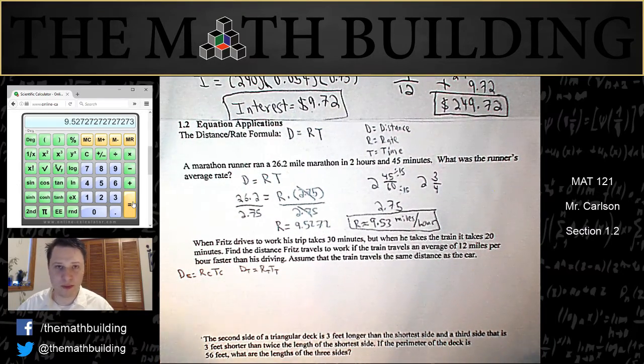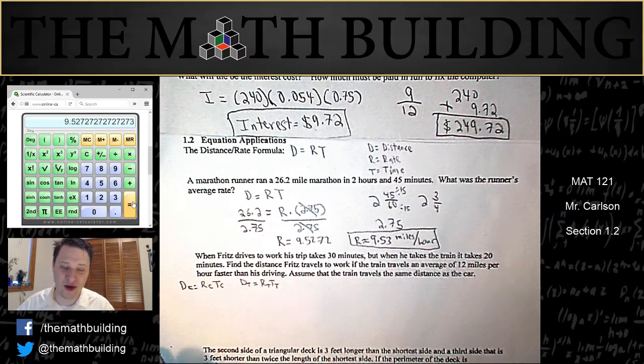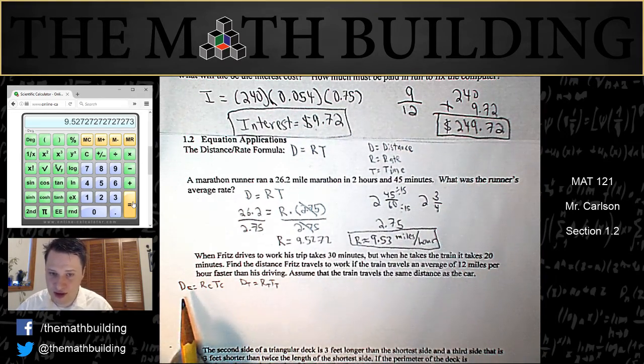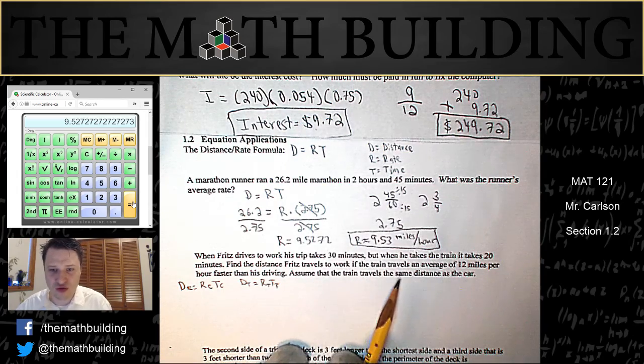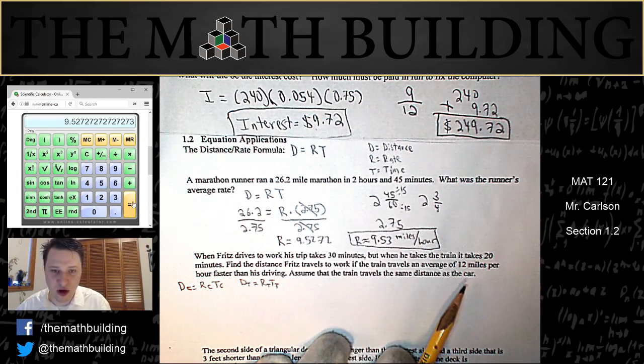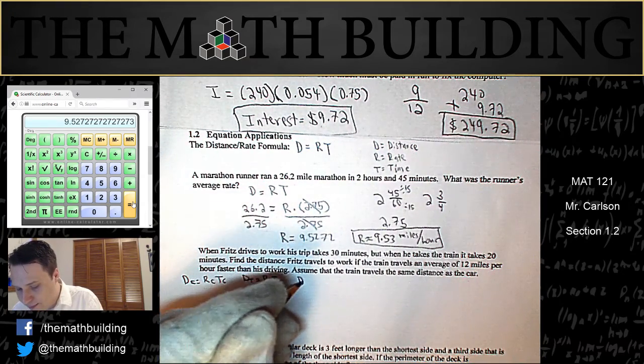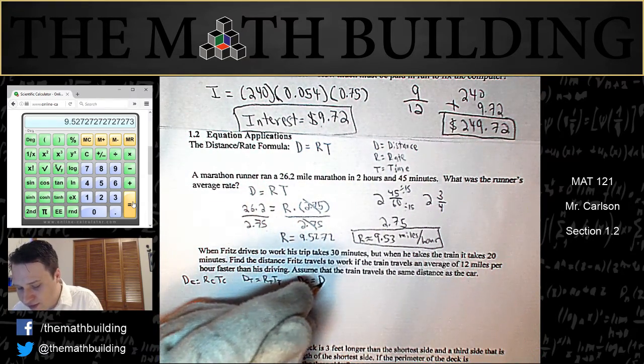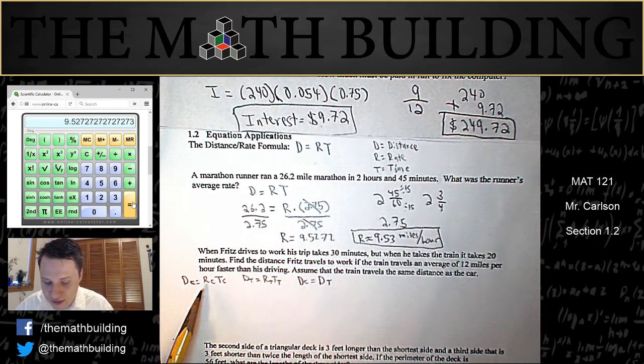So we have two distance rate time formulas going on here. And if you remember from a previous class, I hoped, this is too many variables. We can't solve for this right now because there's just too many unknowns. However, here's the key. Assume that the train travels the same distance as the car. Well, if the distances are the same, that means that dc is equal to dt because the distance is the same for the car and the train.